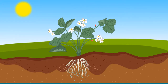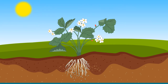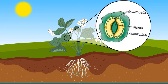Photosynthesis is the food-making process in plants. Green plants are the producers. The part of a plant that is usually green is the leaves, which is why leaves are called the food factories of a plant. However, other parts of a plant also play a role in its nutrition. There are tiny pores present mostly on the underside of leaves called stomata (singular: stoma). Each stoma is surrounded by two guard cells.